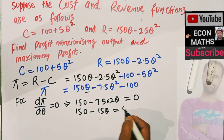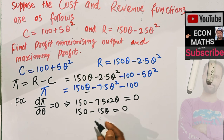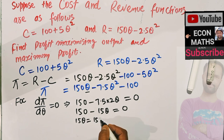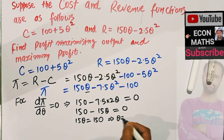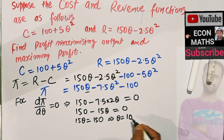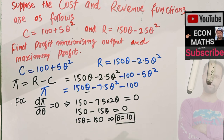Which implies 15q equals 150, which gives us q equal to 150 divided by 15, coming out to be 10. So the profit maximizing output is 10.